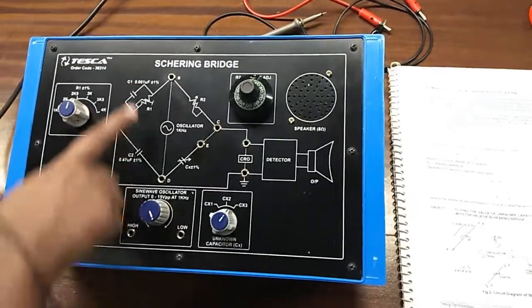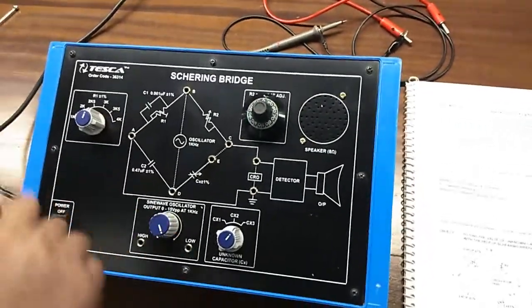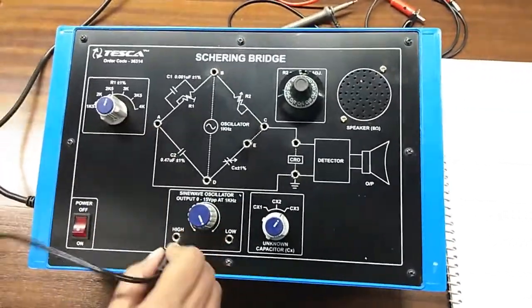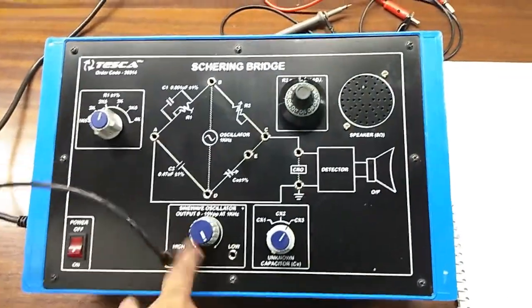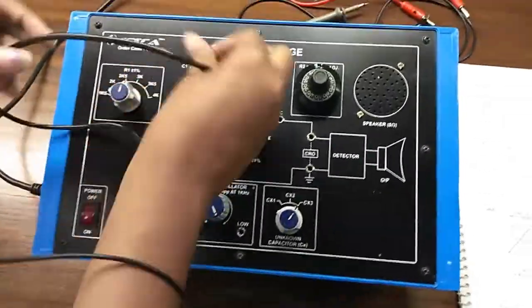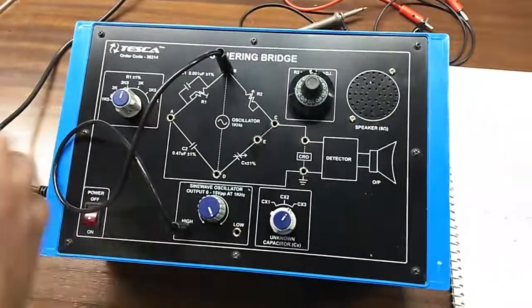First, we will need to give 1 kilohertz sine wave here at point B and D. So connect this high from point B and low to point D.